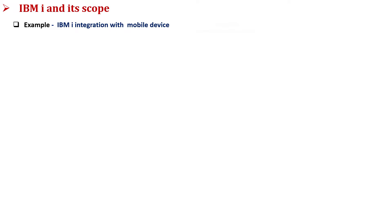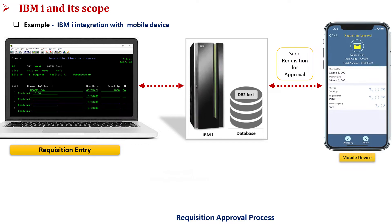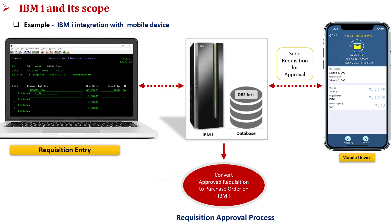IBM i can also be integrated with mobile devices. Just like a scanner device, a mobile device can be integrated with IBM i database using integration methods. For example, in a requisition approval process, when a requisition is created, it may go for approval if the amount exceeds the allowed purchase limit. In almost all industries, a mobile app is developed which can be used to approve or reject the requisition. The mobile device is integrated with IBM i database using an integration method. Once the approval is done from the mobile device, it updates the IBM i system and sets the approved flag, based on which the purchase order is created from the requisition.